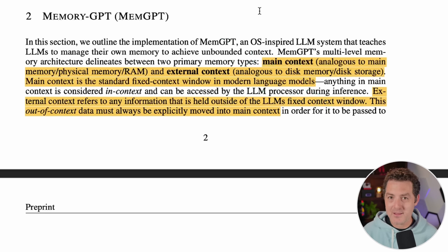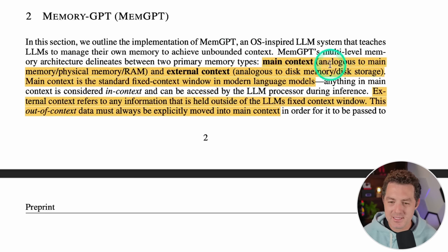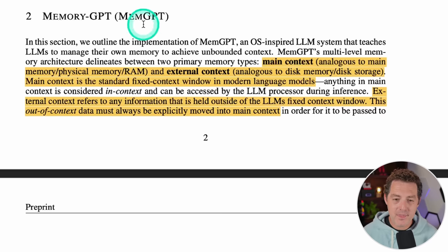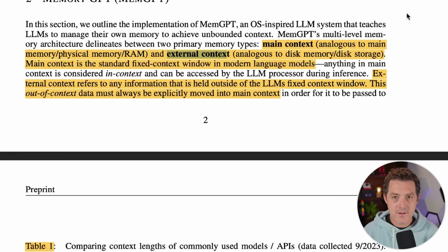The main context is analogous to RAM — physical memory. It's fast and readily available. Then they have the external context, which you can think of as your hard drive — slower but unlimited size. So the fixed context is your RAM, and everything else is your hard drive. They also show a table with maximum token counts for popular models — open source models, GPT models, and Claude models.